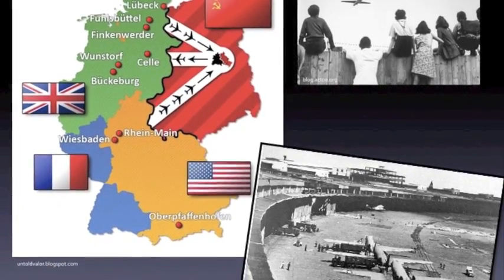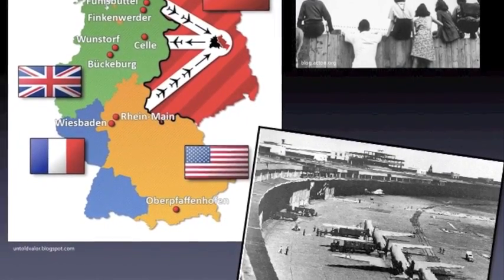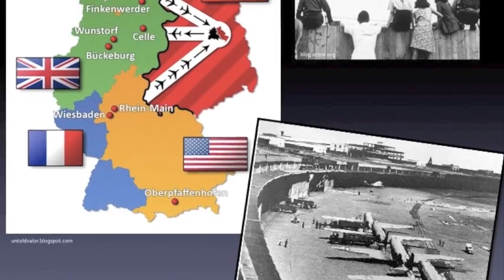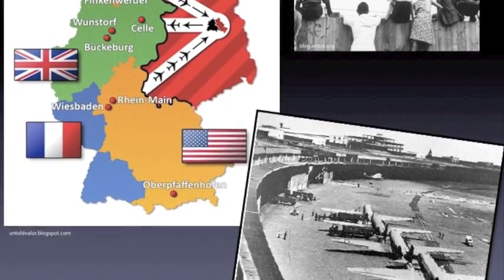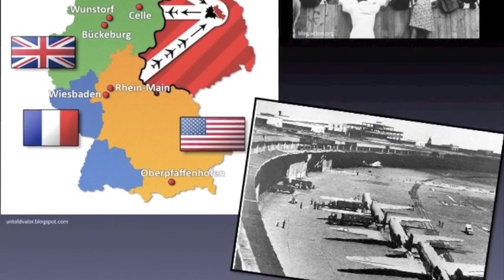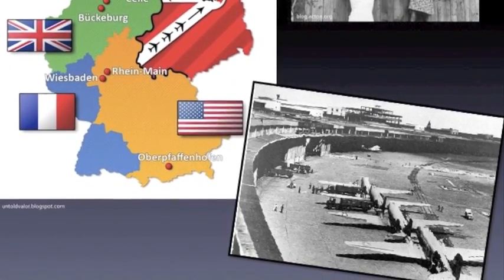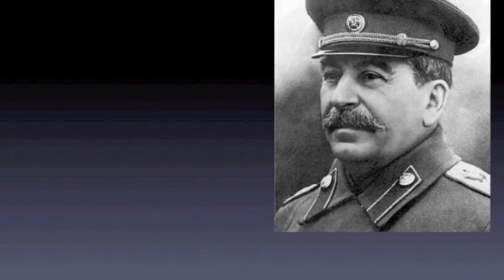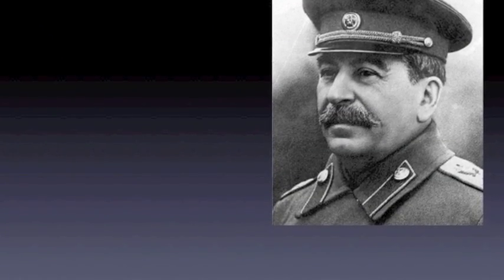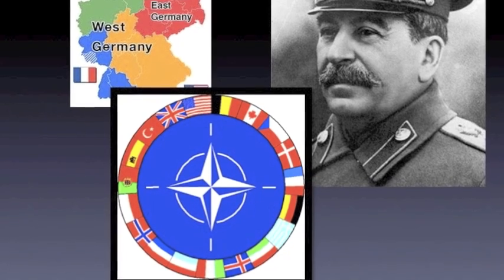Instead of giving Stalin greater control of the region, it led to increased hostilities between the communists and their former liberal allies. It also solidified the Truman Doctrine, which took the United States from an isolationist state at the beginning of World War I and II to an interventionist state in global issues. The Western powers were concerned that Stalin was going to be the next Hitler, taking over Europe piece by piece. This is when they created NATO to contain the spread of communism.